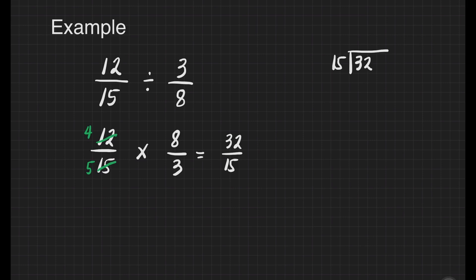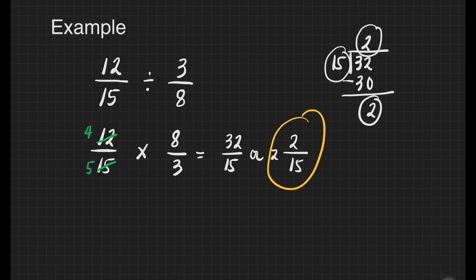Thirty-two divided by fifteen. How many fifteens are there in three? There's none. How many fifteens are there in thirty-two? We have two. Two times fifteen is equal to thirty. Then we subtract. Two minus zero is equal to two. So we will have here two and two over fifteen. So our answer for this question is two and two fifteens. And that's it.